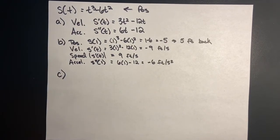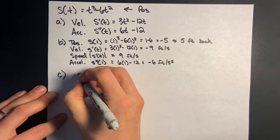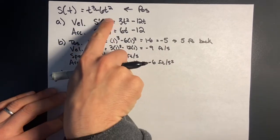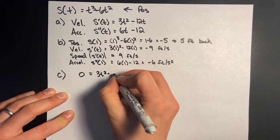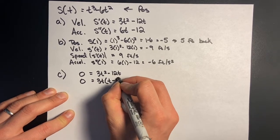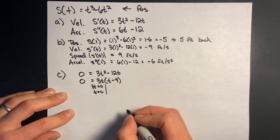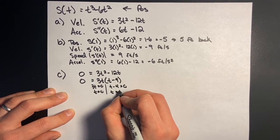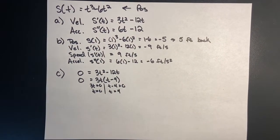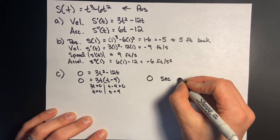Part c asks at what time or times is the particle stopped. Stopped means velocity equals zero. So I set my velocity function equal to zero: 0 equals 3t² minus 12t. I factor out 3t, leaving t minus 4. Setting each factor to zero: 3t=0 gives t=0, and t minus 4=0 gives t=4. If that smells like critical points, it's because it is. The particle is stopped at zero seconds and four seconds.